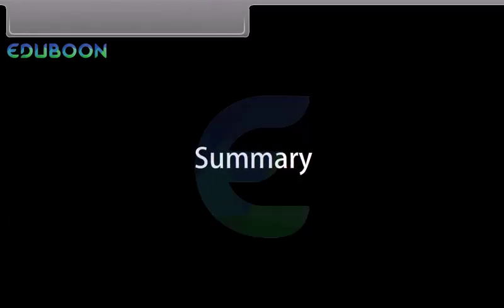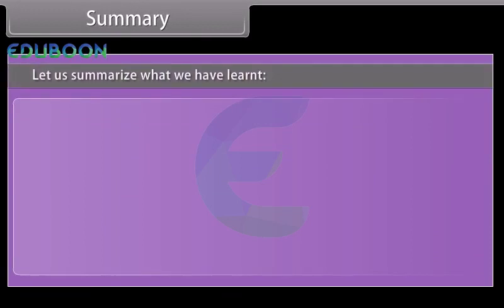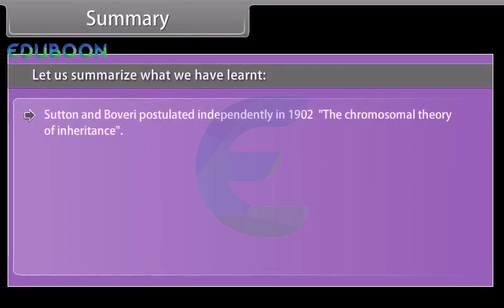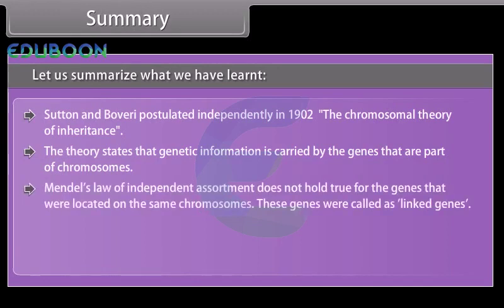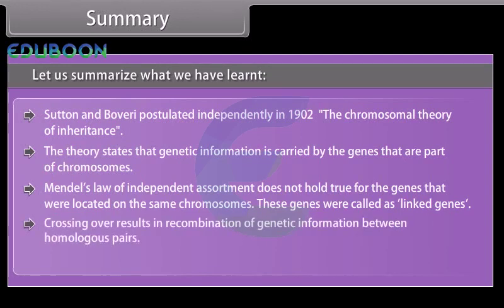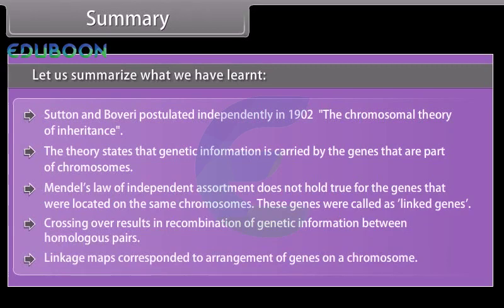Let us summarize what we have learned. Sutton and Boveri postulated independently in 1902 the chromosomal theory of inheritance, which states that genetic information is carried by genes that are part of chromosomes. Mendel's law of independent assortment does not hold true for genes located on the same chromosome — these genes are called linked genes. Crossing over results in recombination of genetic information between homologous pairs. Linkage maps correspond to the arrangement of genes on a chromosome.